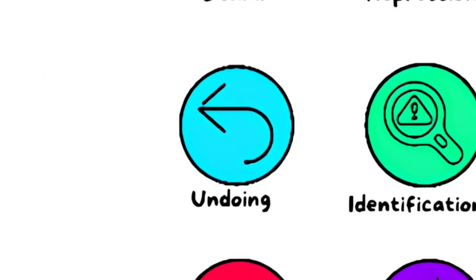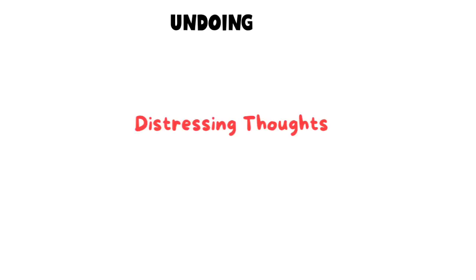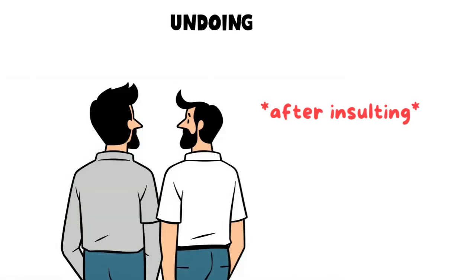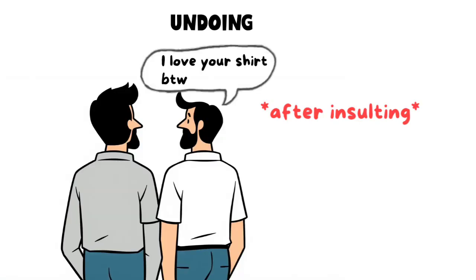Undoing. Undoing is an attempt to erase a distressing thought or behavior by engaging in the opposite behavior. Someone who insults a friend might later shower them with compliments to cancel out their mistake.